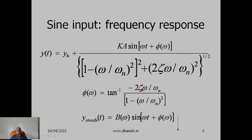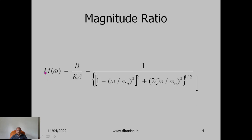The steady-state part can be rewritten as V(ω)·sin(ωt + φ(ω)), where V(ω) is the amplitude which depends on ω. The magnitude ratio is V/Ka — that is, the amplitude of the output signal divided by the amplitude of the output signal if the same signal were applied statically. This equals 1 divided by the square root of [(1 − (ω/ωn)²)² + (2ζω/ωn)²].